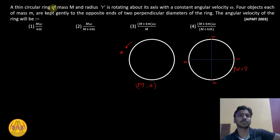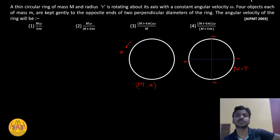A thin circular ring of mass M and radius r is rotating about its axis with a constant angular velocity omega. Four objects, each of mass m, are kept gently to the opposite ends of two perpendicular diameters of the ring. The angular velocity of the ring will be?